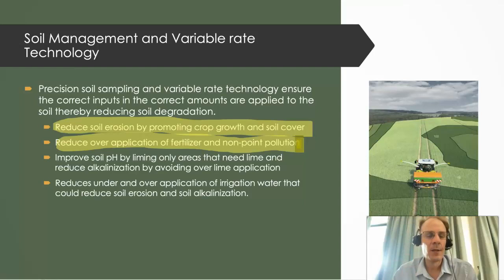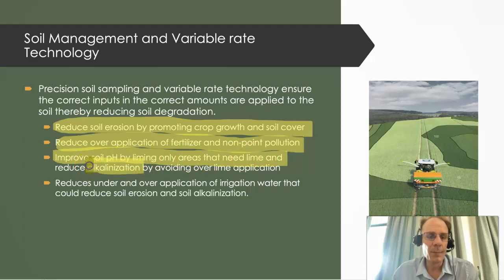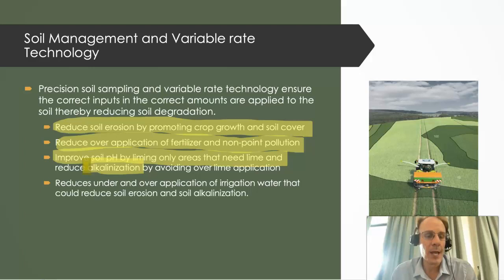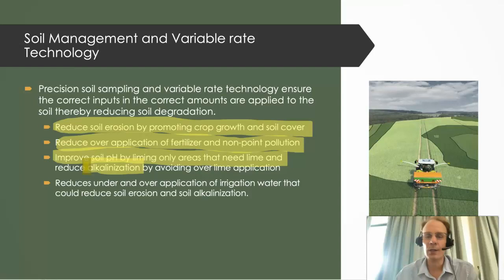We can also improve soil pH through liming, reducing the effect of alkalinization. If we apply lime at an average rate for the field, some areas receive too little lime and remain acidic while others become alkaline. Both situations result in less crop growth and less utilization of nutrients, which may cause problems with soil erosion, nitrate and nutrient leaching, as well as non-point pollution.